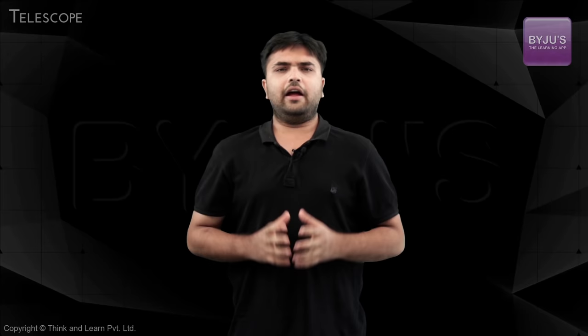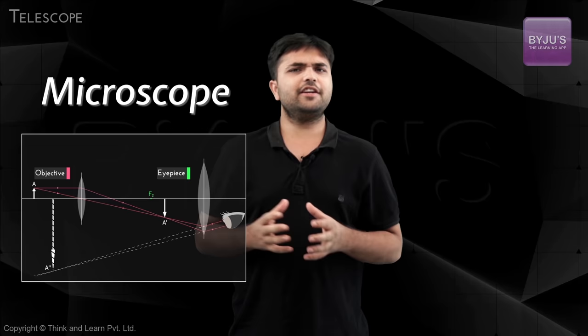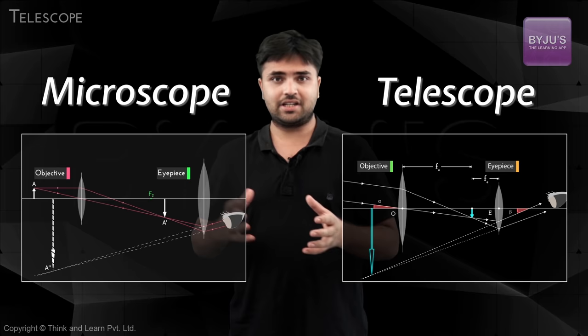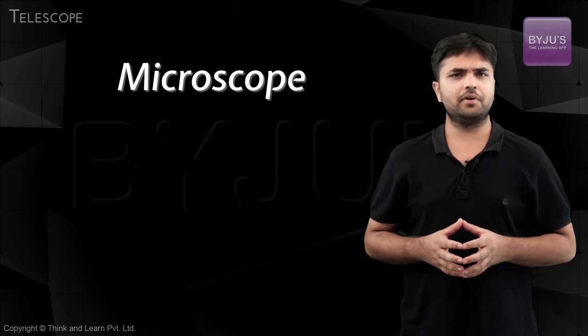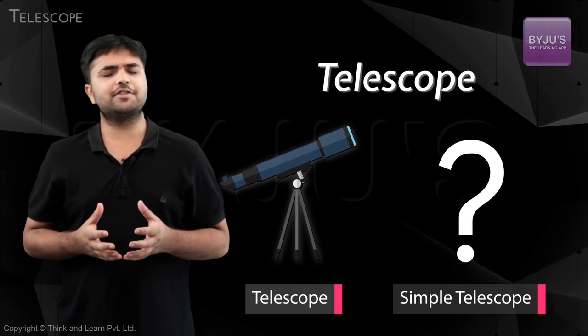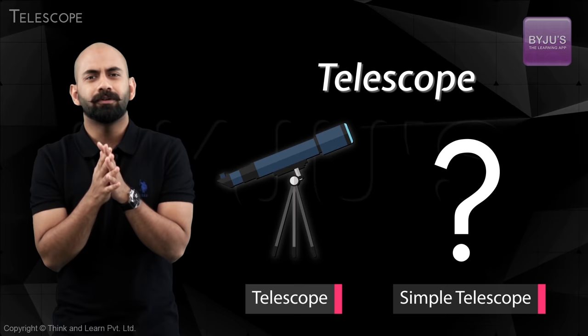A student raises a doubt: microscopes and telescopes have almost similar working, right? They both have two converging lenses and a two-step image formation followed by magnification. But we had two versions of a microscope — a compound microscope and a simple microscope. Why don't we have a simple telescope?